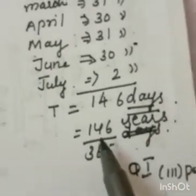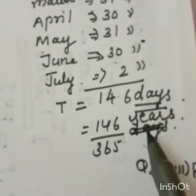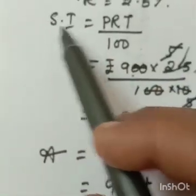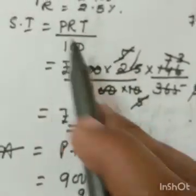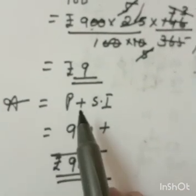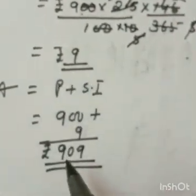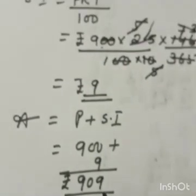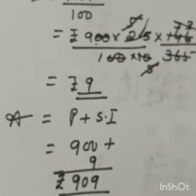Convert days to years by dividing by 365, since one year equals 365 days. Using the formula Simple Interest = PRT/100, putting in the values you get rupees 9. Amount equals principal plus simple interest, so 900 plus 9 — the answer is rupees 909.